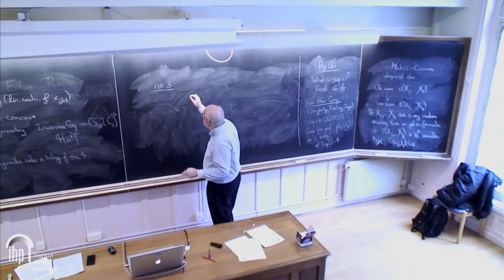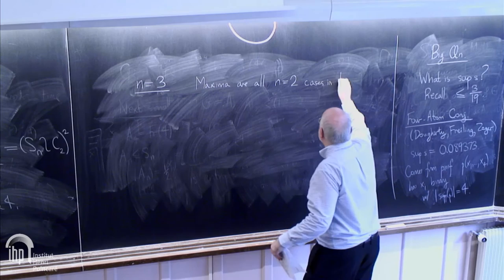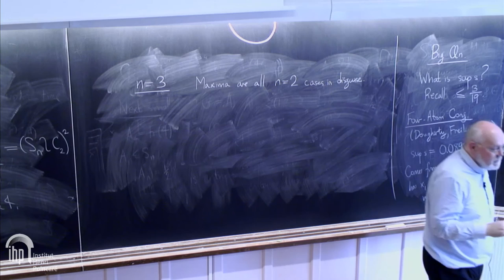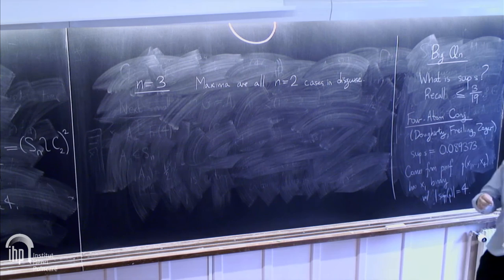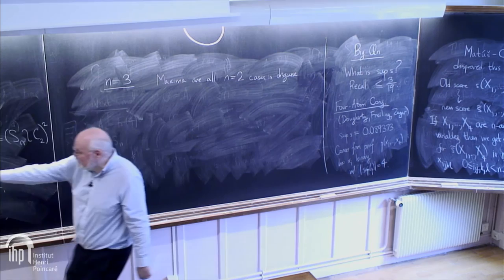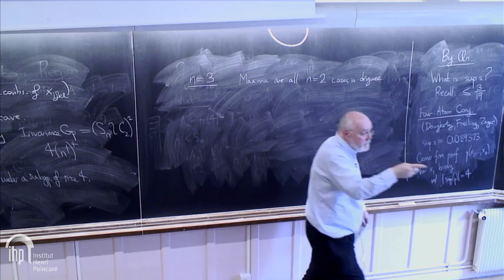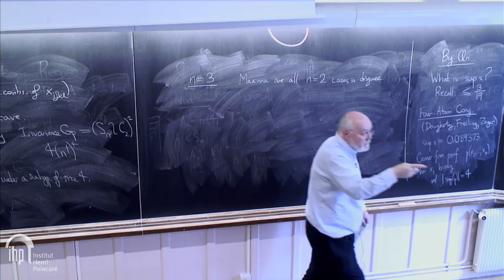For n equals 3, the maxima that we've only ever got are all the n equals 2 cases in disguise. Here you're maximizing a function of 81 variables. What I mean is that if you clump together these 81 variables in clumps of 16, you get this maximum at the same point. There's a theory that allows you to take one of these maxima and produce infinitely many for any larger n maximum.